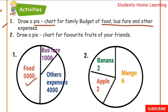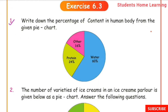One family's total income is 10,000 rupees. Exercise 6.3, First one: write down the percentage of content in the human body from the given pie chart.